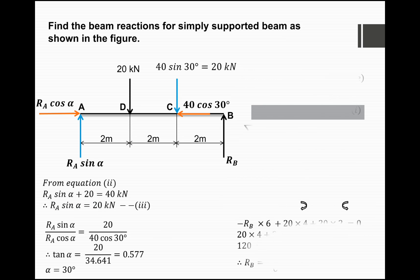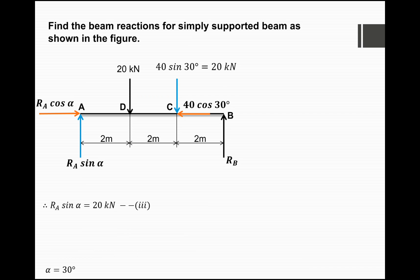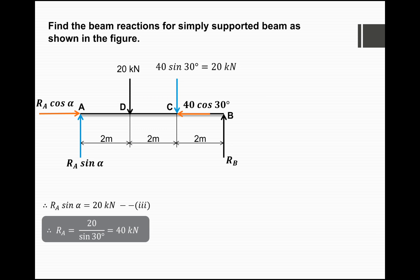Using α = 30°, we find Ra from Equation 3: Ra·sin(30°) = 20 kN, so Ra = 20 / sin(30°) = 40 kN. In this way we can find all reactions for a simply supported beam carrying an inclined point load.